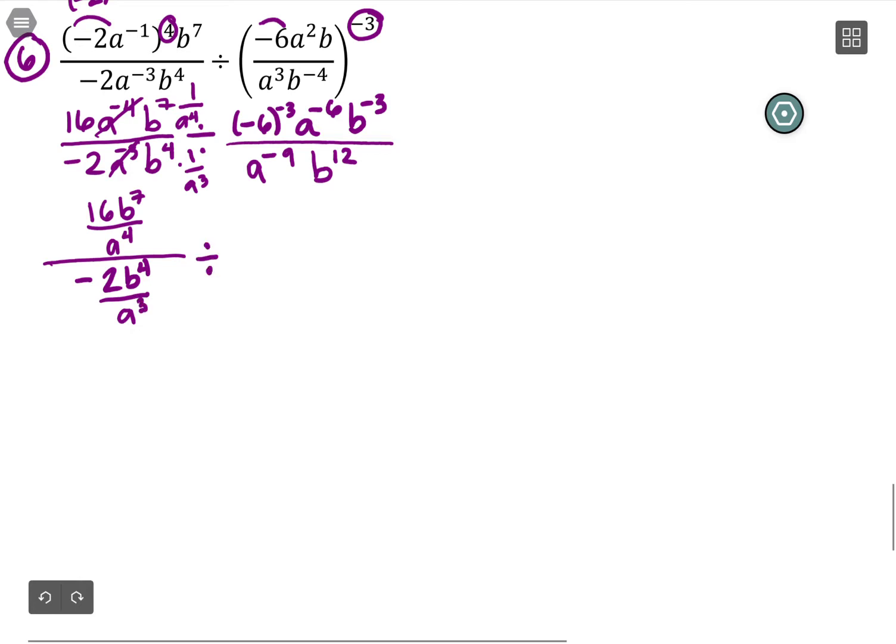And that's going to be divided by—everything has negative exponents in that first piece, so it's all going to be 1 over -6 to the 3, a to the 6, b to the 3.